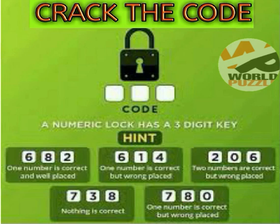The fourth hint is a very important tip in cracking the code. Here we can see that nothing is correct, so all numbers — seven, three, and eight — are the wrong numbers. Since they are wrong numbers, they have to be cut. So seven, three, and eight are crossed out.